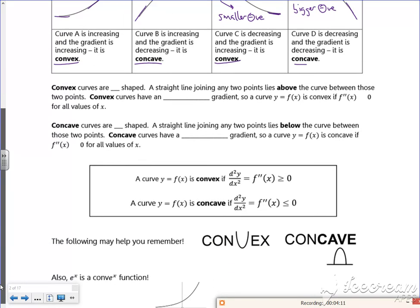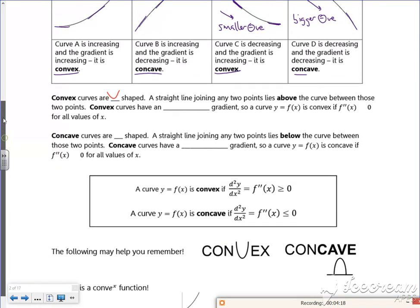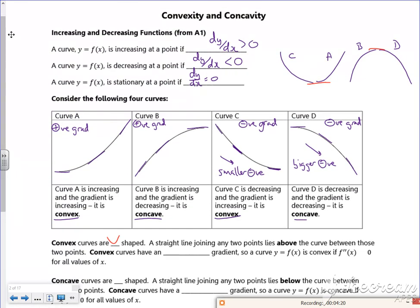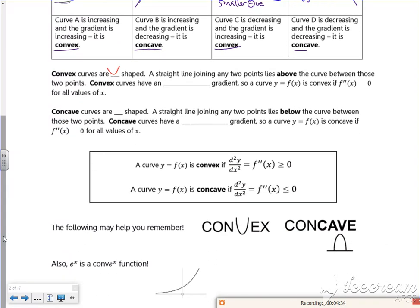So let's have a look down here then. So it says convex curves are U-shaped. So if you look, I did there for convex - C and A were convex. Whereas this one is concave. So I say that looks like the entrance to a cave. So a straight line joining these two points lies above the curve between those two points. Convex curves have an increasing gradient.